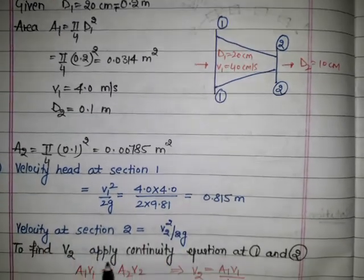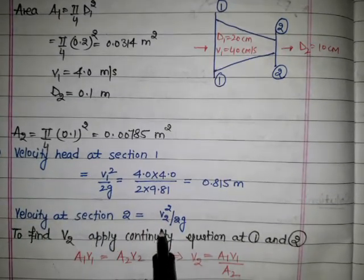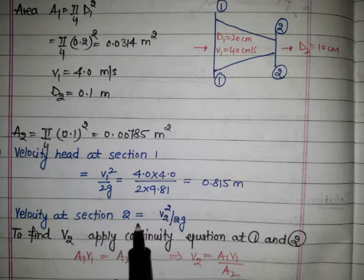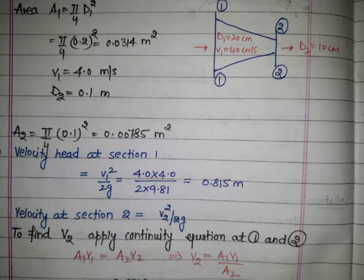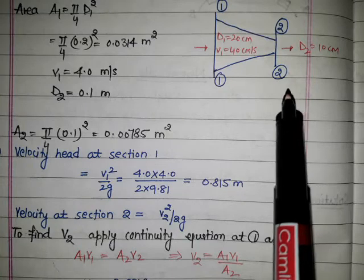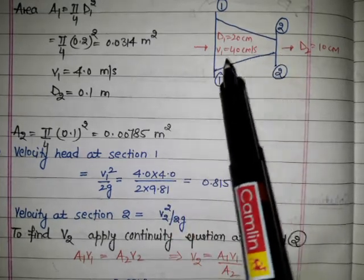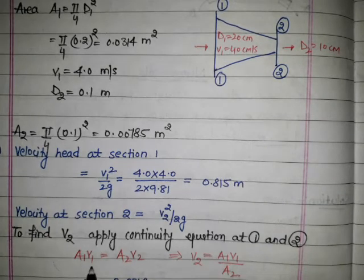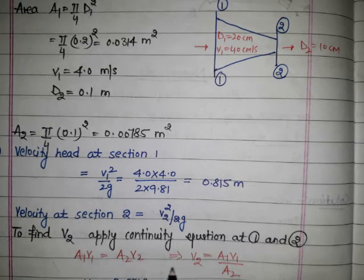For section 2, the velocity head is v2²/2g, but first we need to find v2. Applying the continuity equation at sections 1 and 2: a1·v1 = a2·v2, therefore v2 = (a1·v1) / a2.